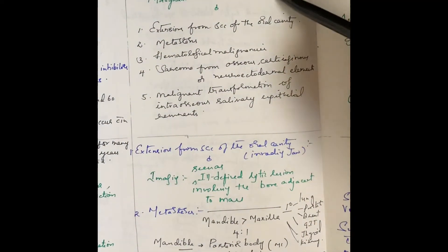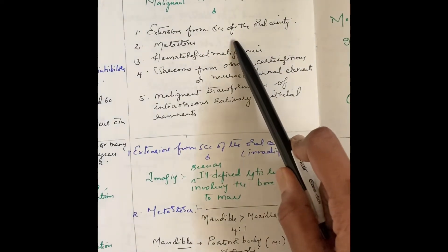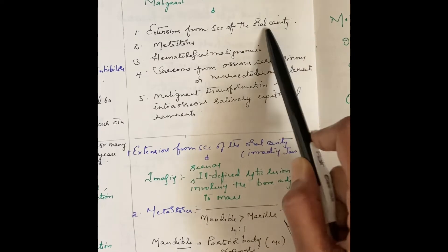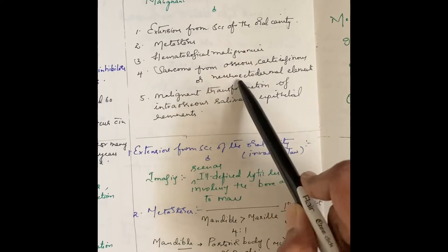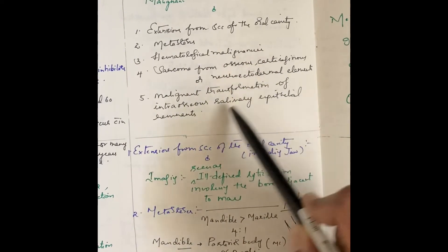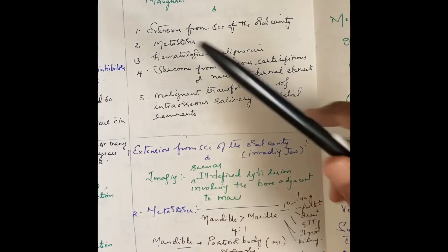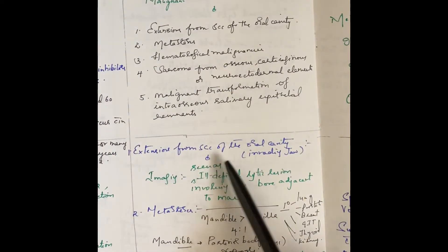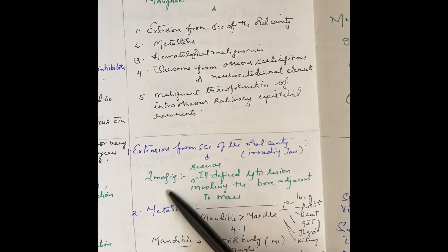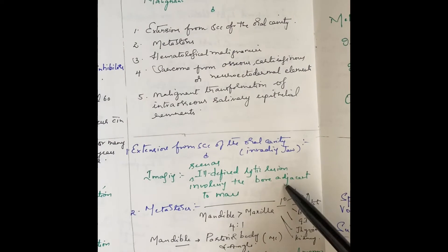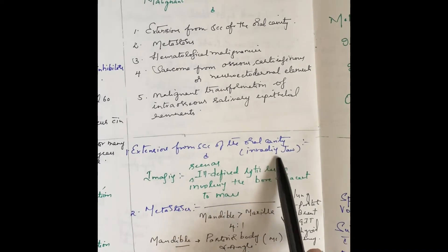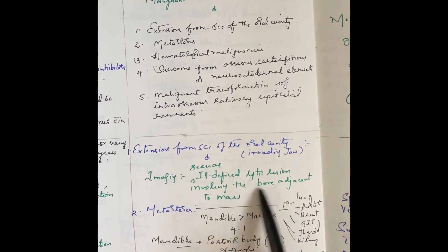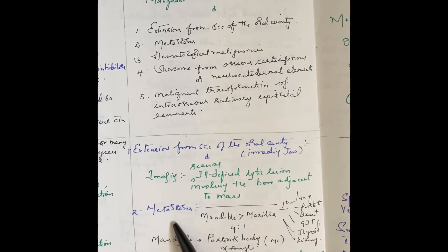Non-odontogenic malignant tumors can be due to extension of squamous cell carcinoma from the oral cavity, metastasis, hematological malignancies, sarcoma from osteocartilaginous or neuroectodermal elements, or malignant transformation of intraosseous salivary epithelial remnants. For squamous cell carcinoma of the oral cavity invading the jaw, imaging shows an ill-defined lytic lesion involving the bone adjacent to the mass.